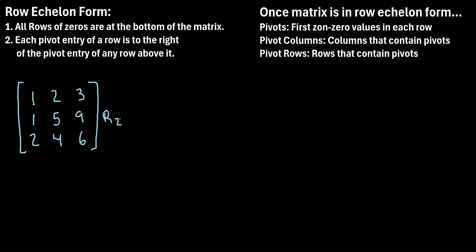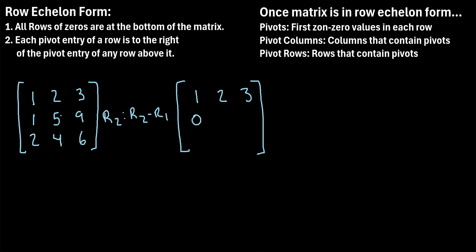Let's say row two is going to become row two minus row one. The first row won't change at all — we'll just rewrite those values. The second row will be: one minus one, which is zero; then five minus two, which is three; and nine minus three, which is six. The last row didn't change at all. Now we just need this value right here to be a zero in order for this matrix to be in row echelon form.